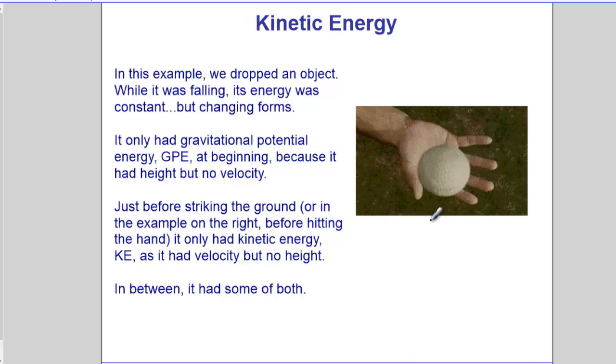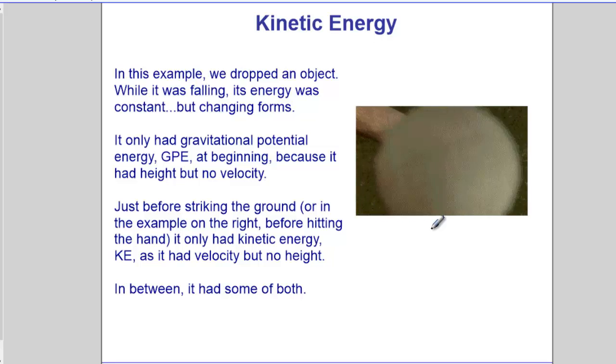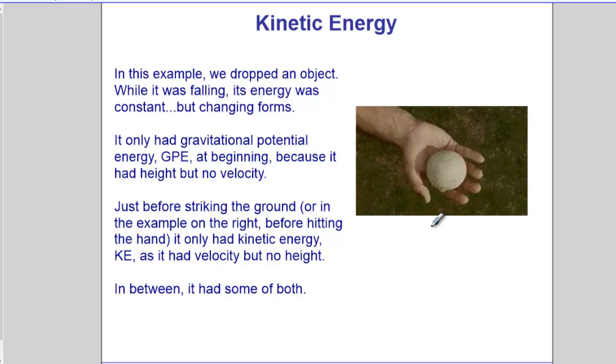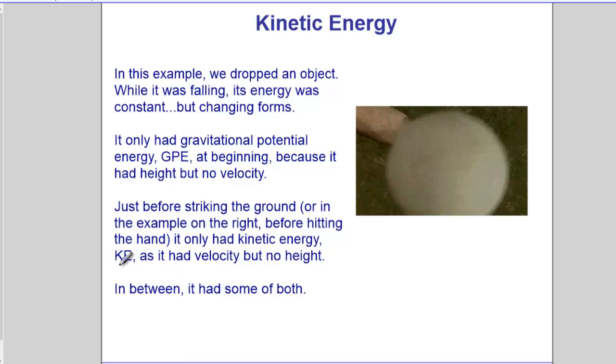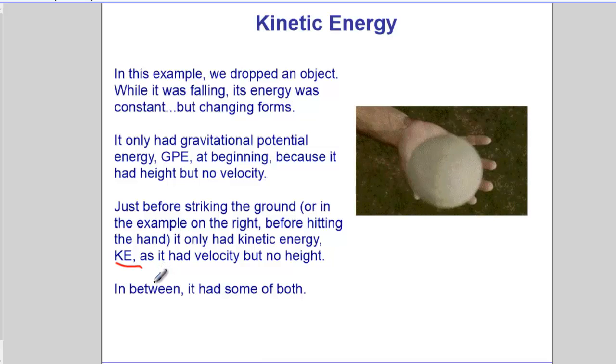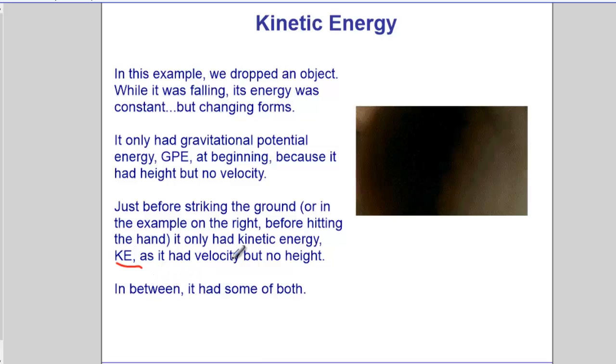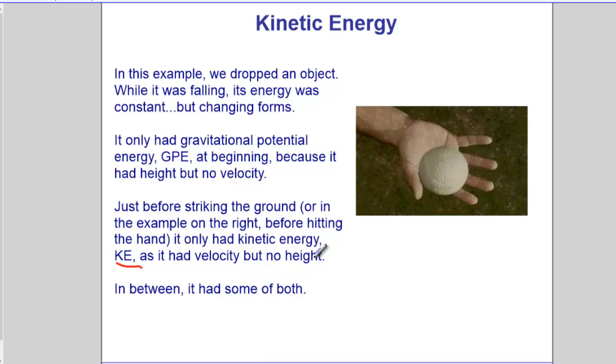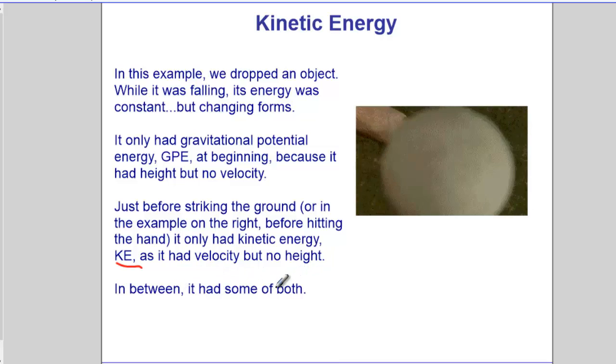In this example, you drop an object when it's falling, its energy was constant, but it's changing forms. You lose potential energy, but you end up gaining what's called kinetic energy. Just before striking the ground, it has kinetic energy and it has velocity but no height.